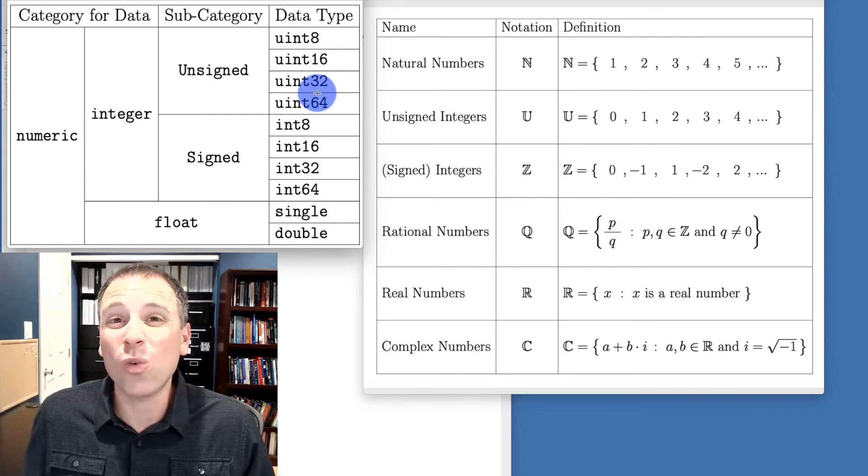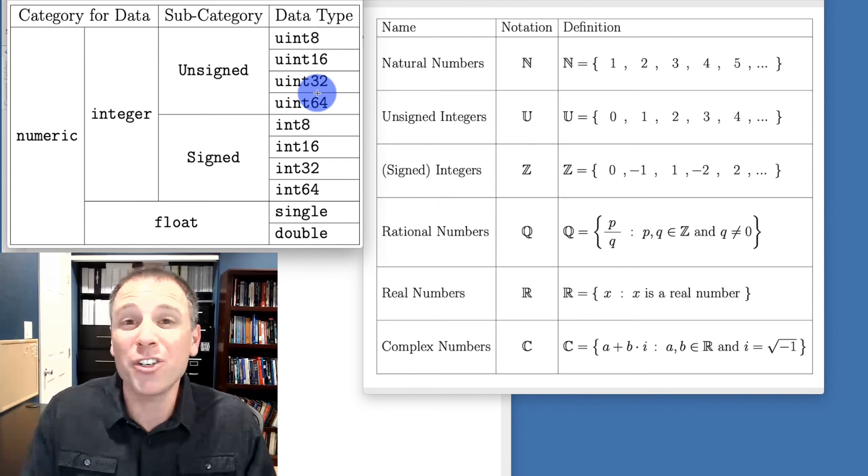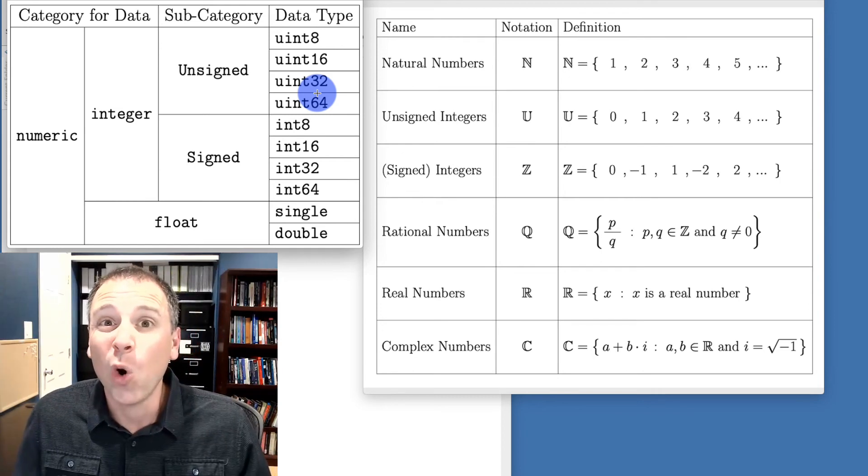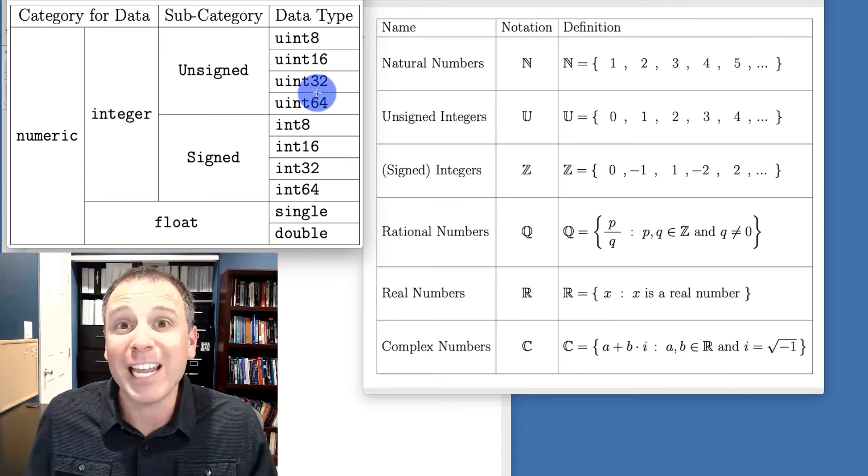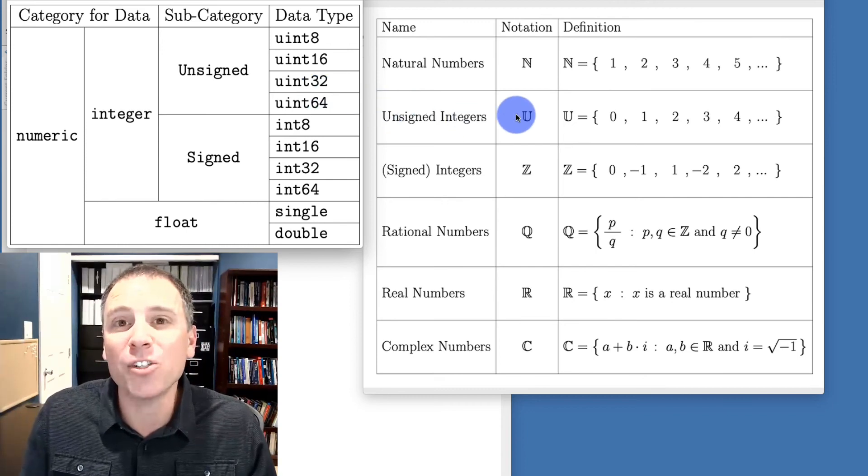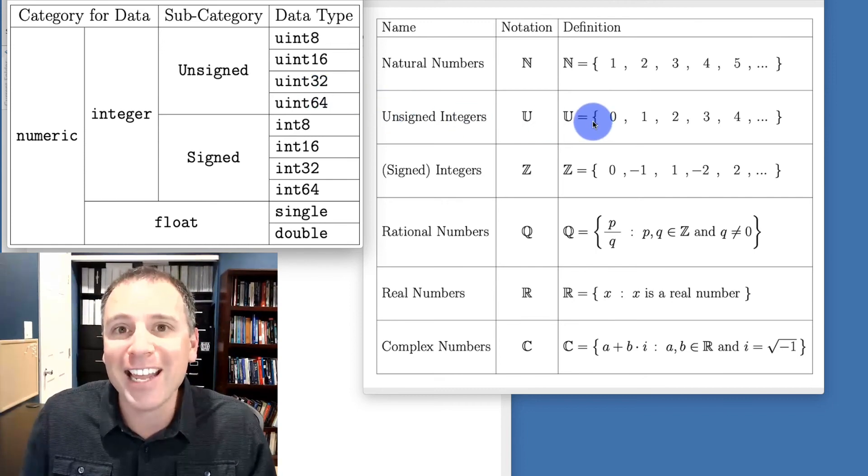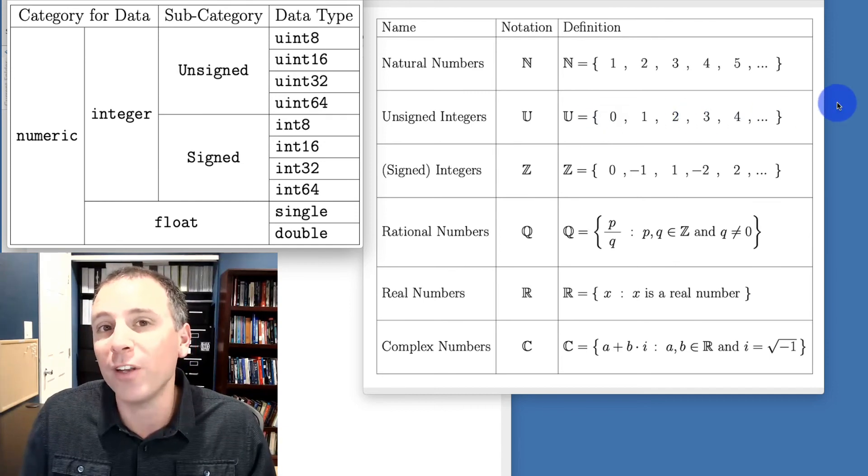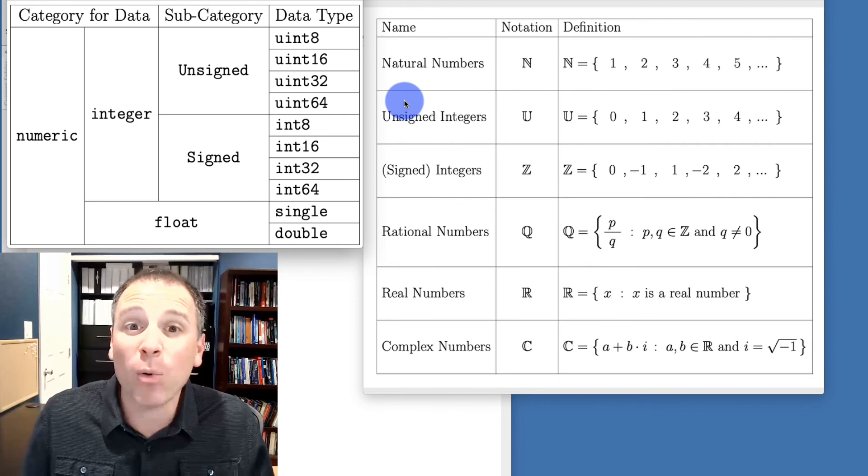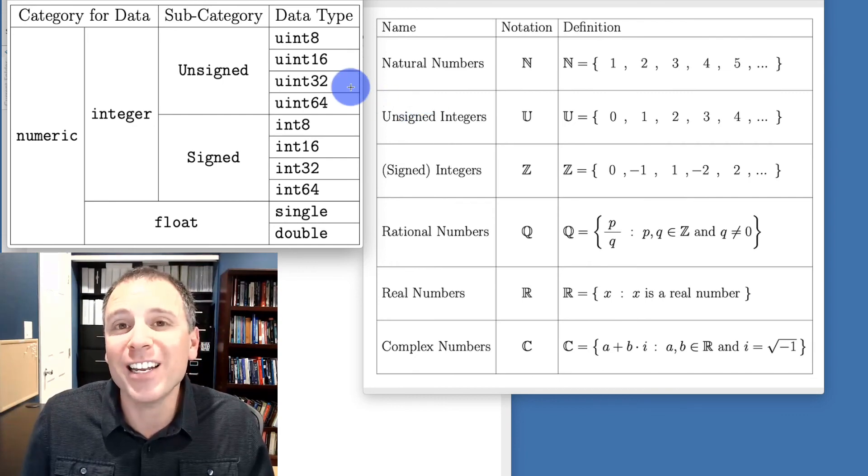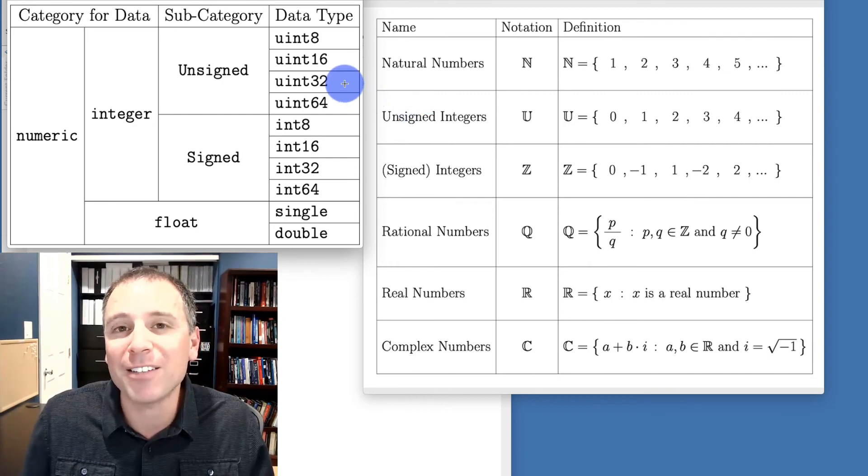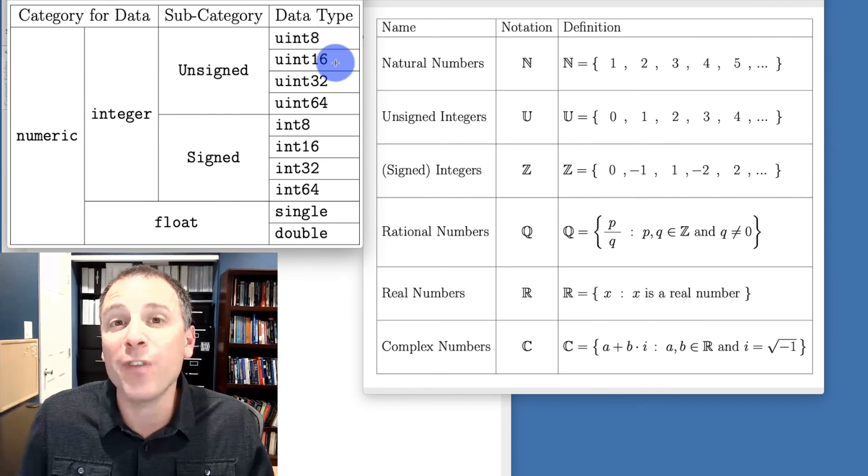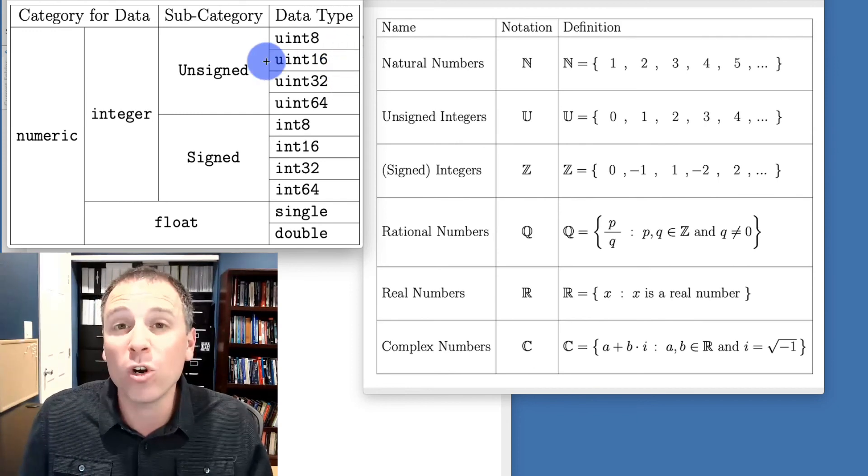So if someone asks you the question, what are unsigned integers, I would encourage you to ask them back, well, what do you mean? Do you mean from a mathematical standpoint or do you mean from a programming standpoint? In a mathematical standpoint, unsigned integers is a set of non-negative counting numbers. So 0, 1, 2, 3, all the way up to infinity. In a programming standpoint or a computation standpoint, unsigned integers represent special data classes used to encode and save unsigned integer values as variables in our computer programming language.